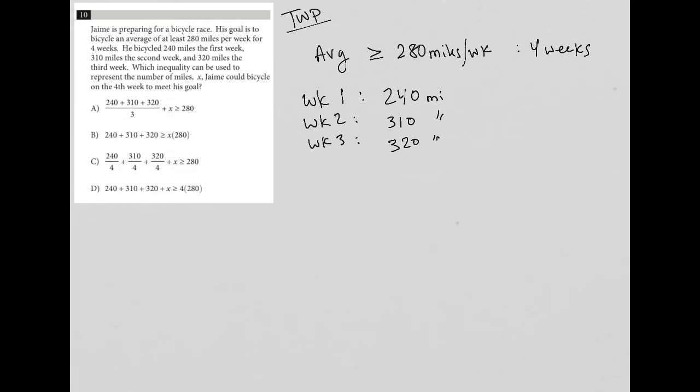Which inequality can be used to represent the number of miles X Jamie could bicycle on the fourth week to meet his goal? All right, so here is all of the provided information. And basically we're saying week four is this X value that we don't know.